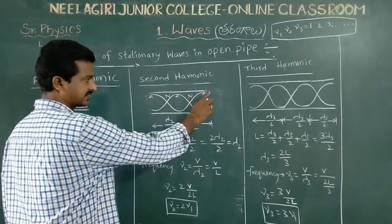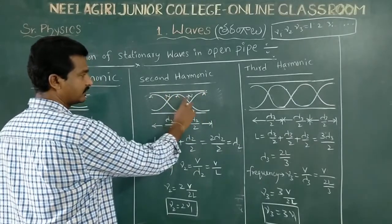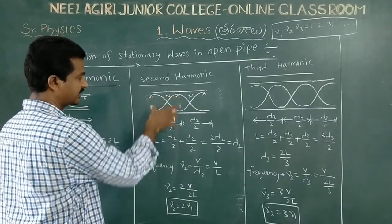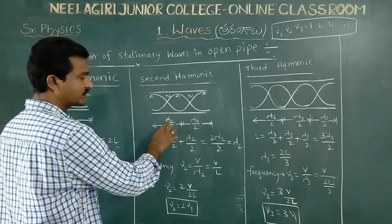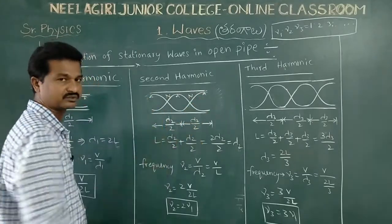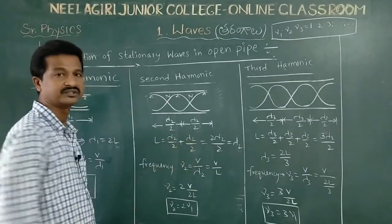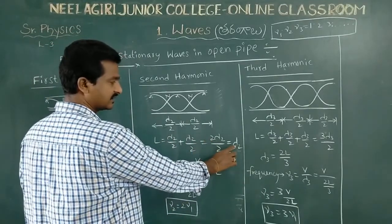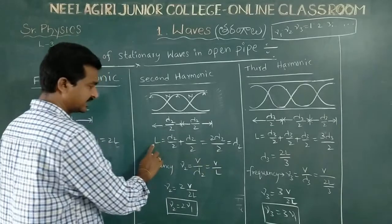At open ends, compulsory antinodes are formed — one, two nodes, three antinodes total. The length between adjacent antinodes is λ/2. So the total length L = λ₂/2 + λ₂/2, giving L = λ₂. Therefore λ₂ = L.